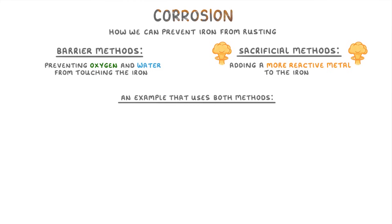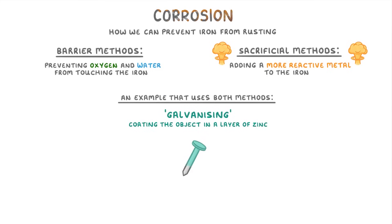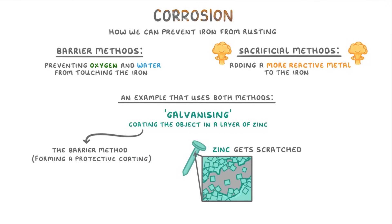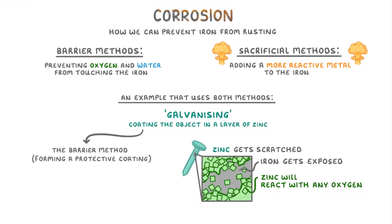An example that uses both of these methods is galvanizing. This involves coating the iron object in a layer of zinc, which is effectively the barrier method because it forms a protective coating around the entire nail. However, if the zinc coating gets scratched and the underlying iron gets exposed, the zinc will still react with any oxygen near the nail because it is so much more reactive — so it's also an example of the sacrificial method.